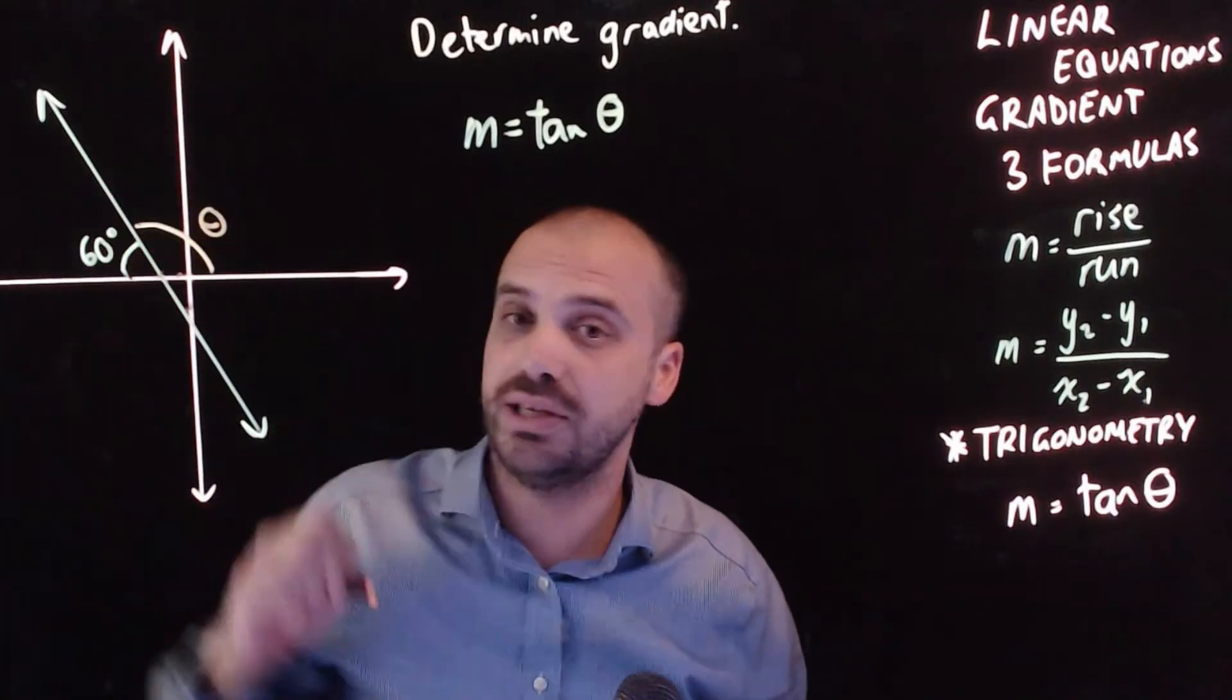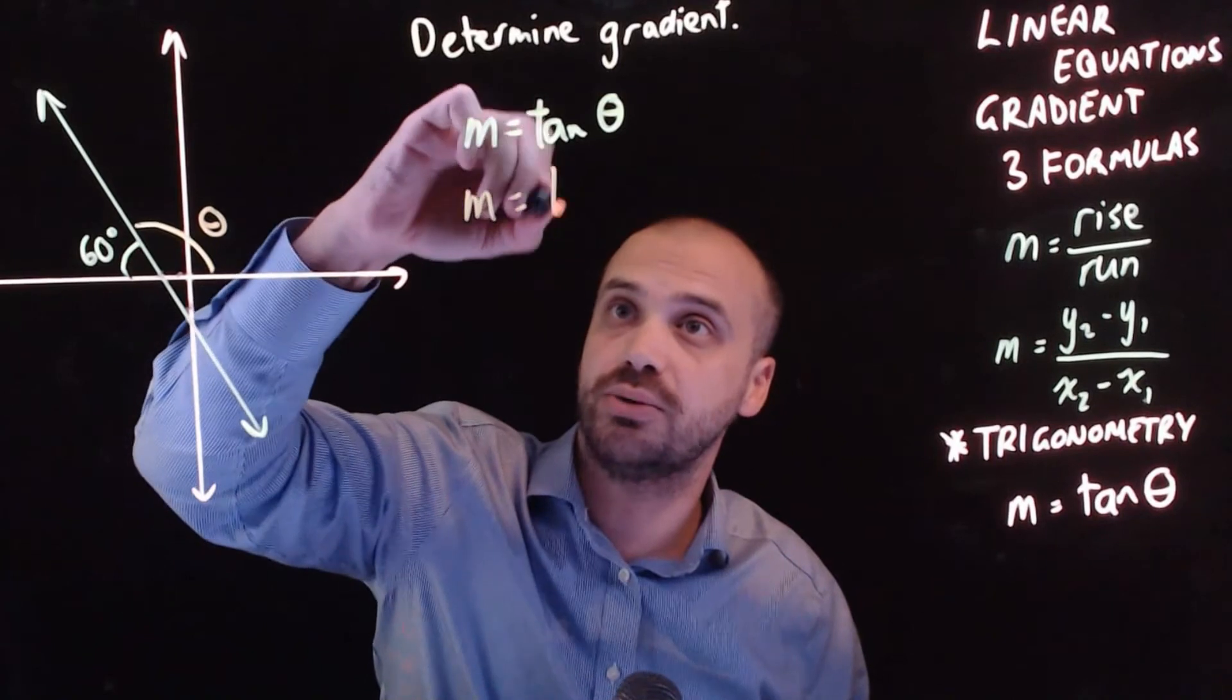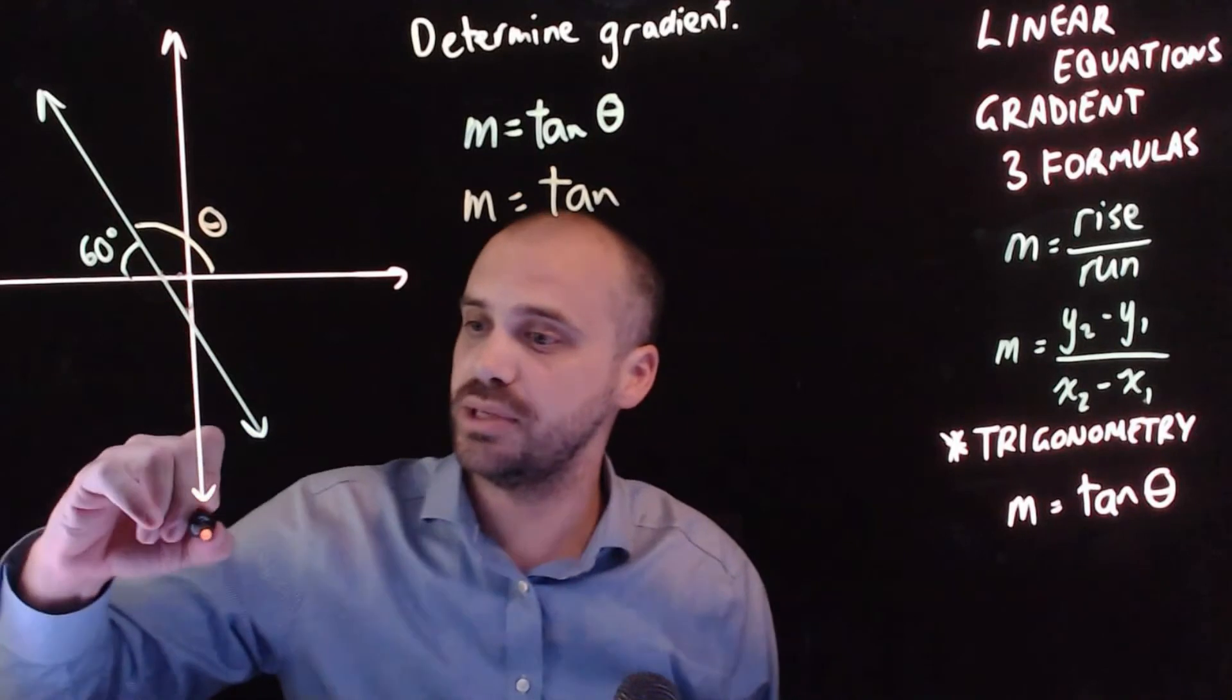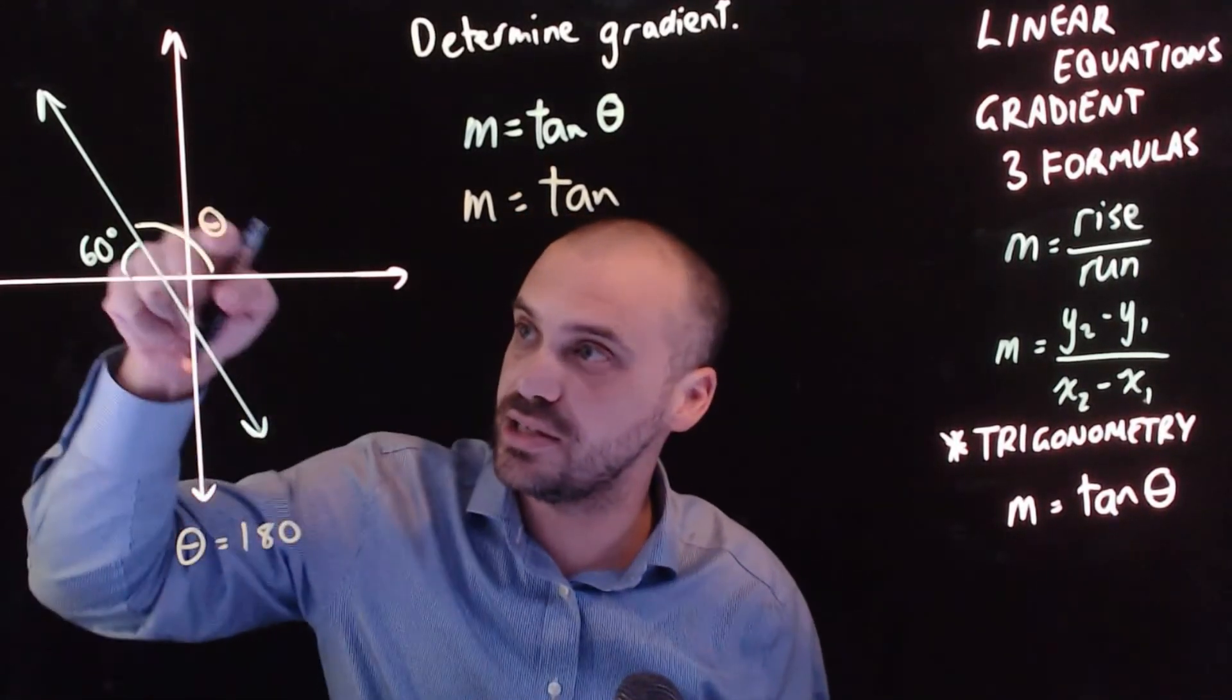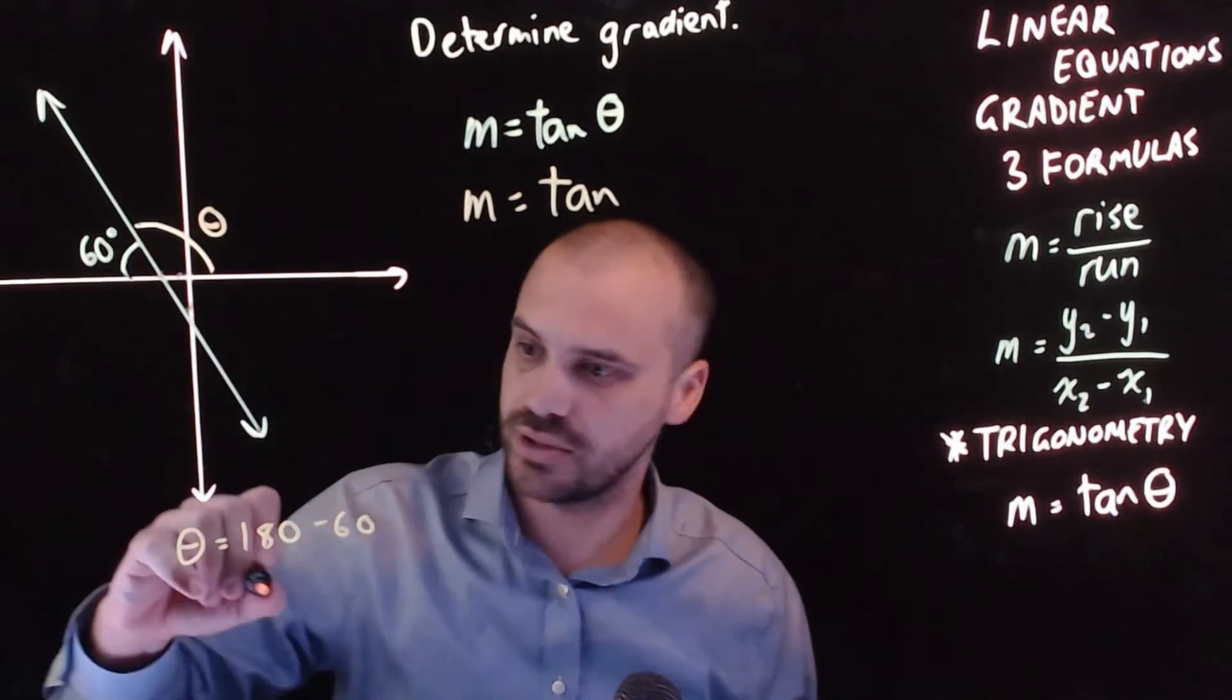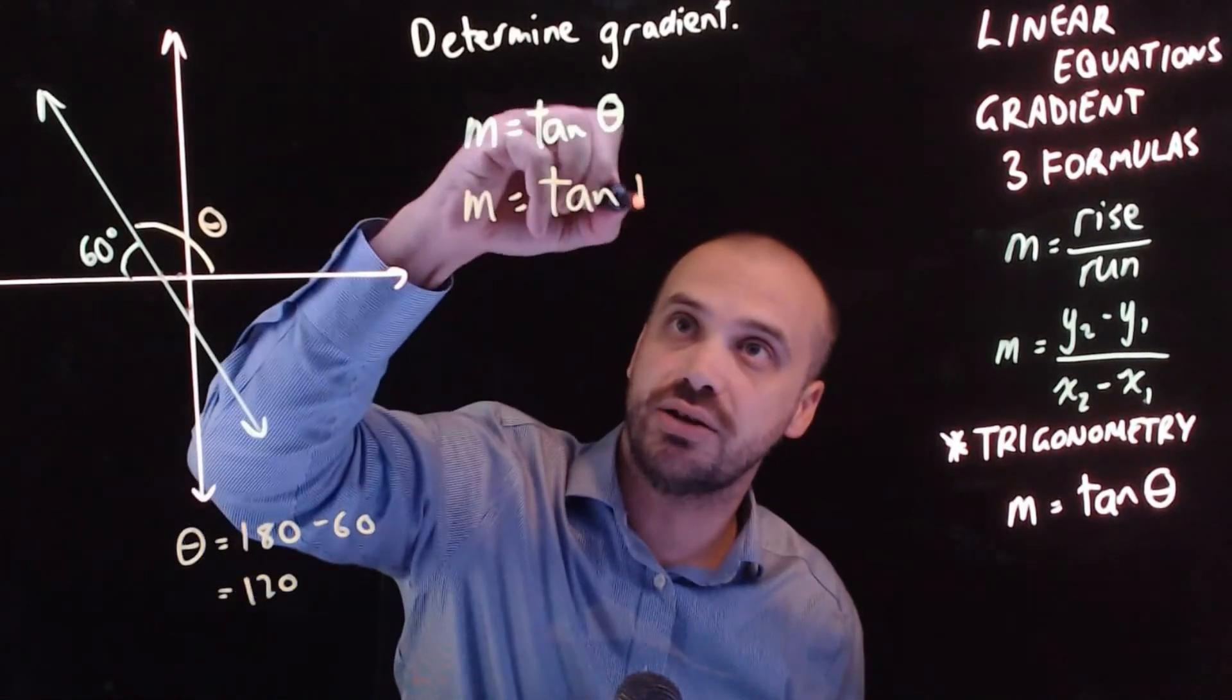Which obviously means now that m is going to be equal to tan of that bit there. So let's think about what that bit is. Theta is equal to 180 degrees of full straight line minus 60 degrees. Which is 120 degrees. So m is equal to tan 120.